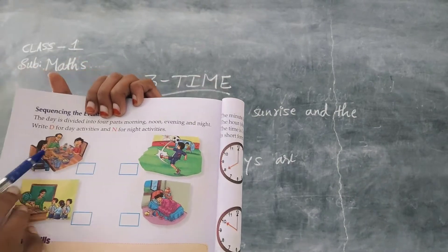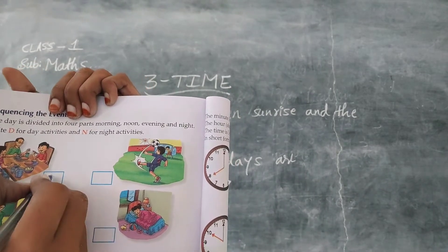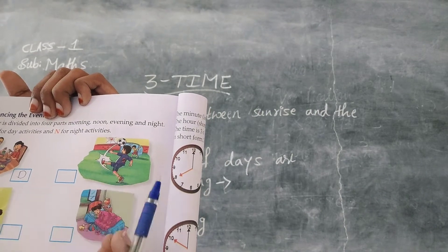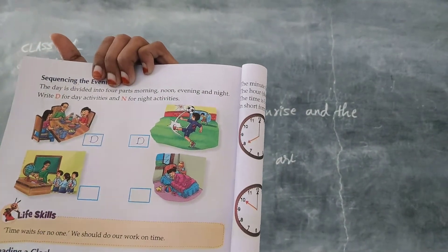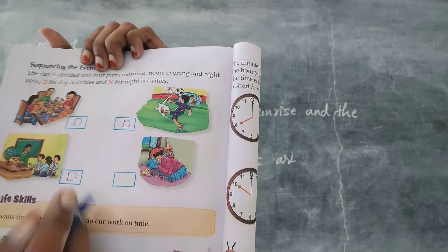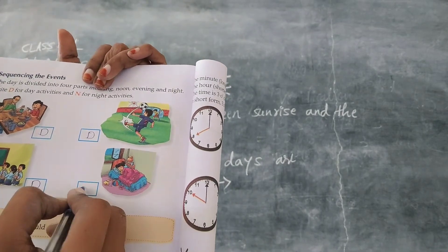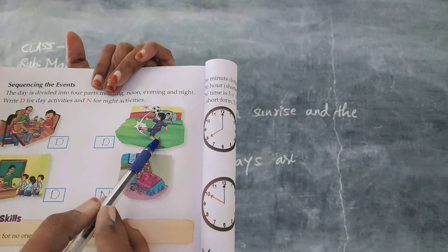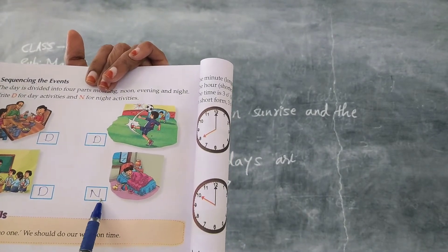See here — the first activity: these people are having their breakfast, which we do at day time, so write D here. This boy is playing football — this activity also we do in day time, so write D here. These people are in school — we are in school at day time, so write D here. This girl is sleeping — when we sleep it is night time, so write N here.